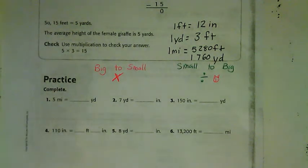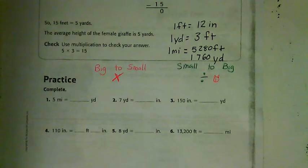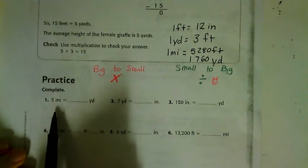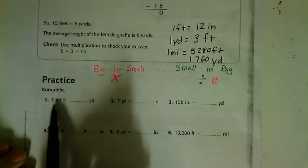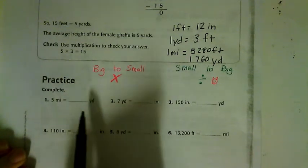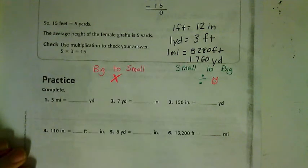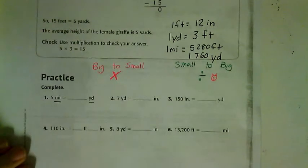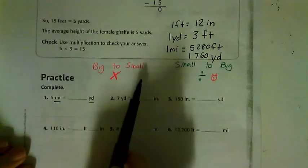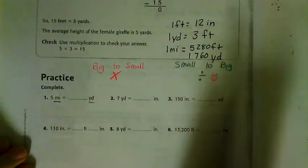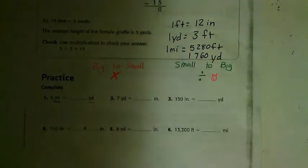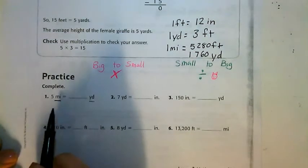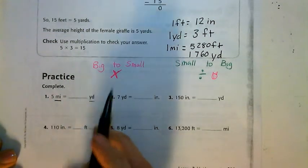We still look at our conversion equation. So let's look at the first one. We have 5 miles and we want to figure out how many yards that will be. Again, we're going to look at our units—miles to yards—and ask ourselves: am I going from big to small or small to big? Well, I know that miles are much bigger than yards, so I know that I'm going from big to small, which means I'm going to have to multiply.